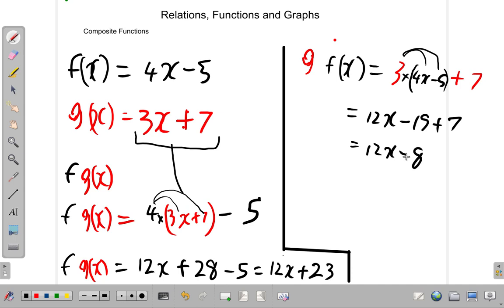So therefore g f of x is 12x minus 8. I hope that's what you got when you worked it out. Alright, so this was an example, a specific example of calculating two composite functions.